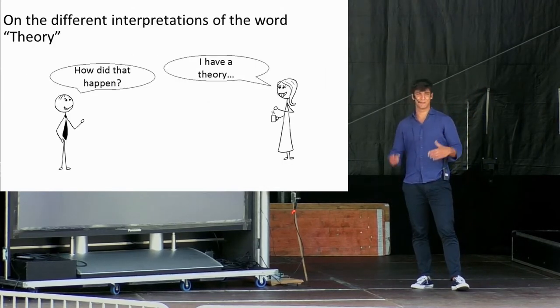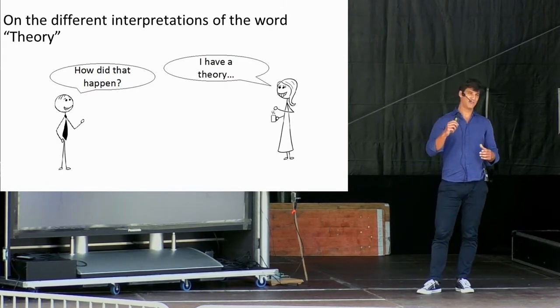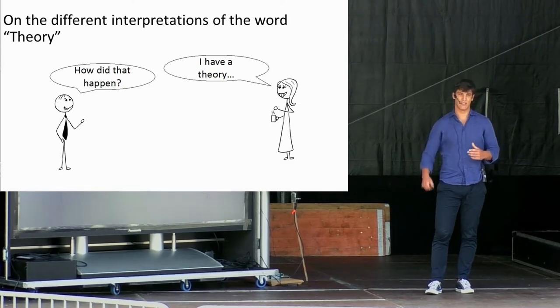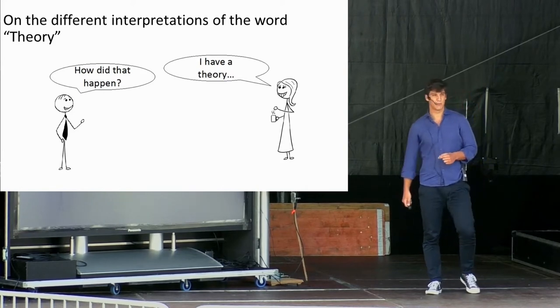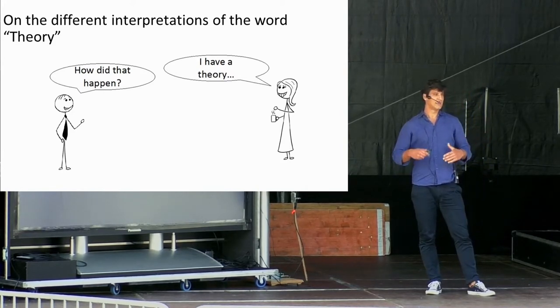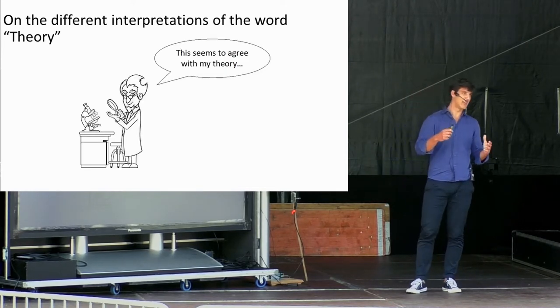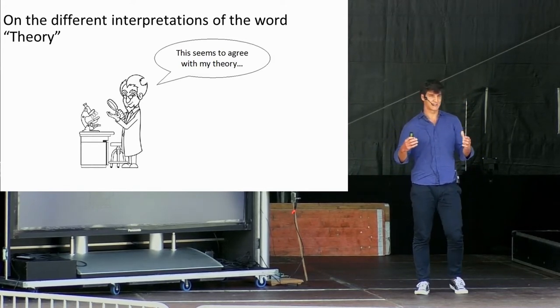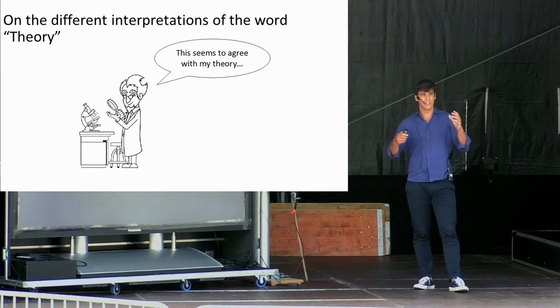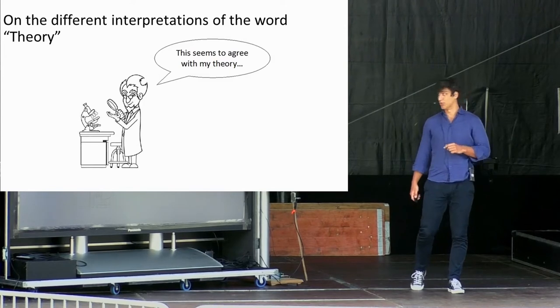But before doing so, it is important to understand what scientists mean when they talk about a theory, which is slightly different than how the word is used in our everyday life. Commonly, we talk about theory as an idea or a guess that we have about something that has happened and that might not be really connected to reality in any way. In science, we refer to the word theory as a description or a story that allows us to interpret observations and facts. We can then play with this story in order to uncover relationships in the real world.